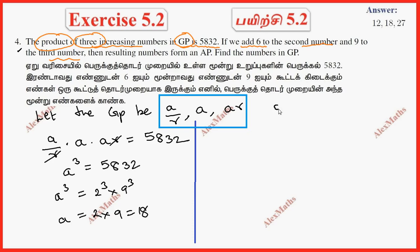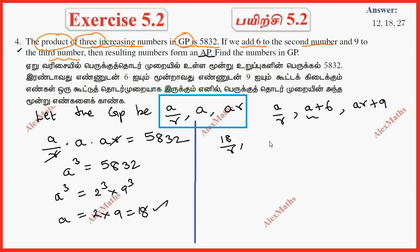So the terms are: A/R, A + 6, and AR + 9. These form an AP, meaning the difference between consecutive terms is constant. Substituting A = 18, we get 18/R, 24, and 18R + 9 in AP.